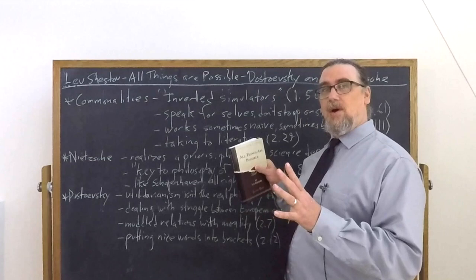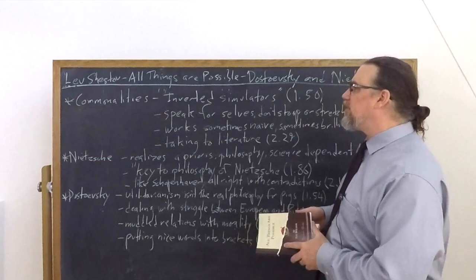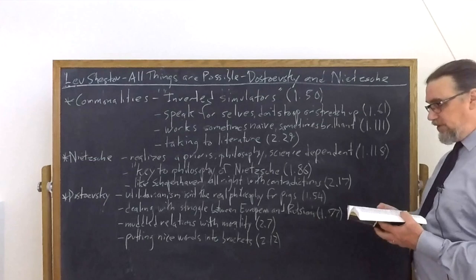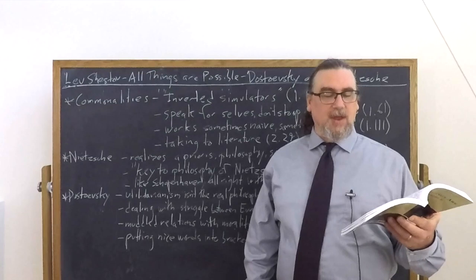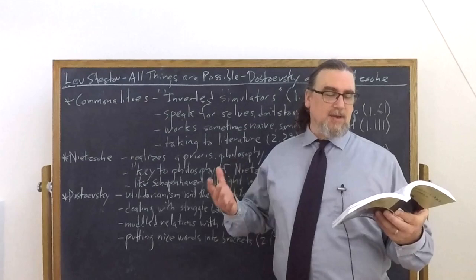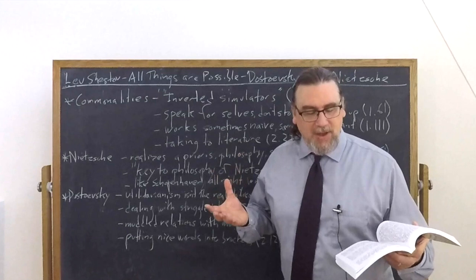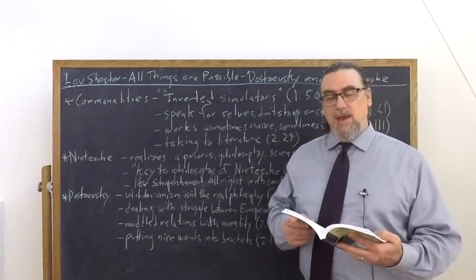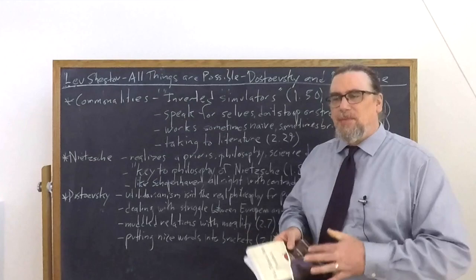Shestov also remarks that in some cases their works are really great. And in other cases, like he says, sense and folly are not at all native qualities in a person. In a crisis, a stupid person becomes clever. And he says, who do we look at for an example? What a gaping simpleton Dostoevsky looks in his Injured and Insulted, not to mention Poor Folk. These early works. But in Letters from the Underground and the rest of his books, he is the shrewdest and cleverest of writers.